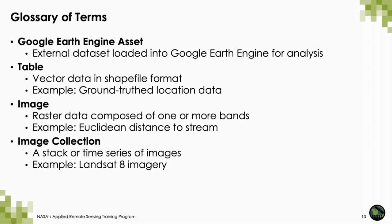As a quick review of glossary terms: a Google Earth Engine asset is an external data set loaded into Google Earth Engine for analysis. Tables are vector data in shapefile format — for example, ground truth location data or a shapefile of your study area. An image refers to raster data composed of one or more bands, such as distance to stream. An image collection is a stack or time series of images, like Landsat 8 imagery. We will be working with an image collection today and mosaicing that to an image for easier working purposes.